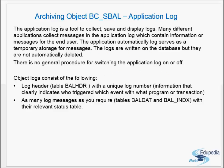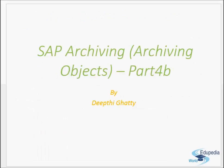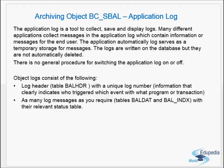The first object is the application log and the second is change documents. The archiving object is BC_S_BAL for application log. The application log is a tool used to collect, save, and display logs. Many different applications collect messages in the application log, which contain information or messages for the end user. All the messages displayed to us when we run transactions or programs are recorded here.